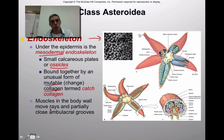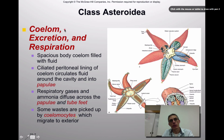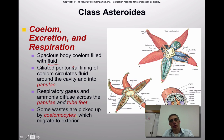Now looking at the coelom — the body cavity — excretion, and respiration: the coelom inside these animals is typically filled with fluid, which makes sense for an aquatic animal. They have a ciliated peritoneal lining of the coelom that circulates that fluid throughout the cavity and into the papulae. Those papulae are the dermal branchia or respiratory structures found on the surface of the animal.